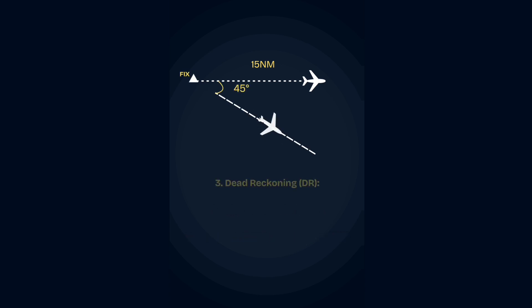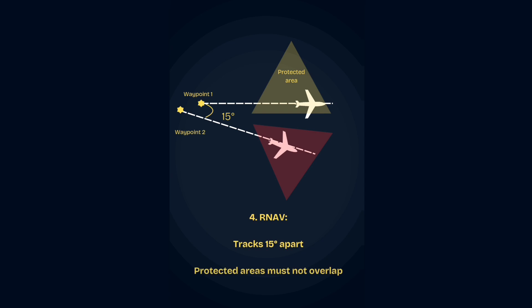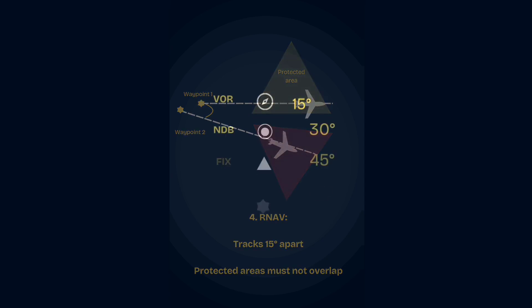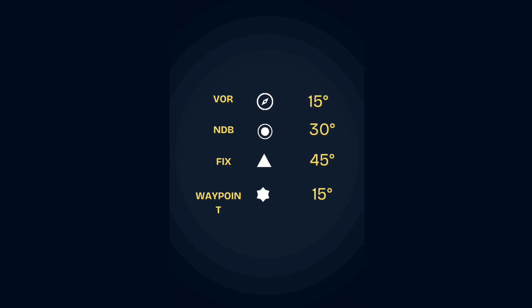With dead reckoning, the separation is widest at 45 degrees between tracks. With area navigation, tracks should be at least 15 degrees apart and their protected airspace must not overlap. With different navigation aids, different angles — but the goal is the same: keeping aircraft safe.